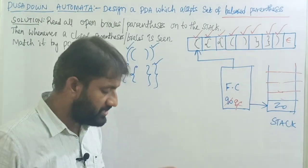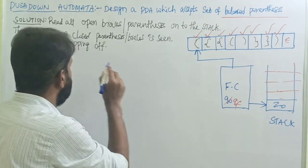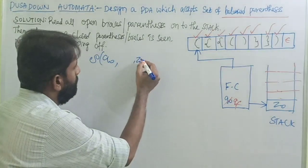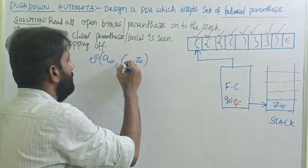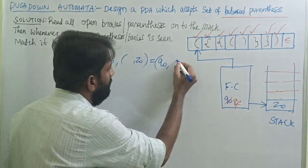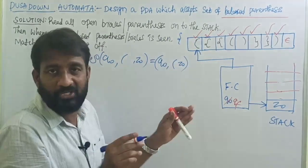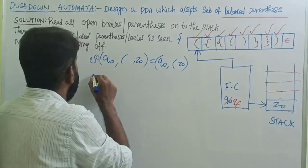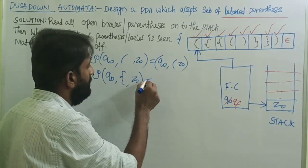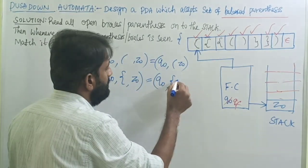This is the logic. Now let me write the transitions, then we will draw the graphical notation. Initial state is q0. If the top of the stack is z0 and input is open brace, add open brace onto the stack and remain on q0: δ(q0, {, z0) = (q0, {z0). If input is open parenthesis with top z0: δ(q0, (, z0) = (q0, (z0).